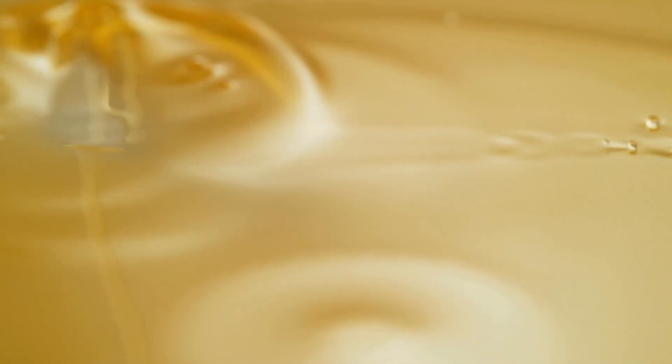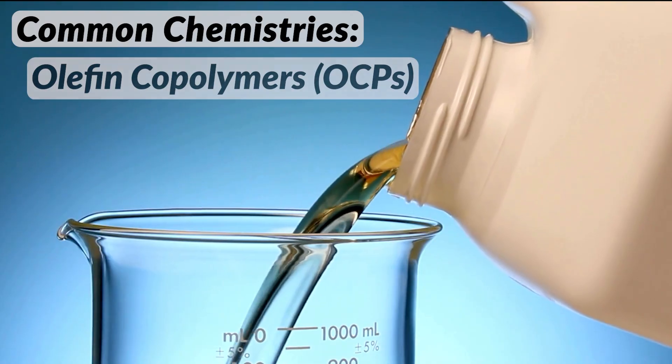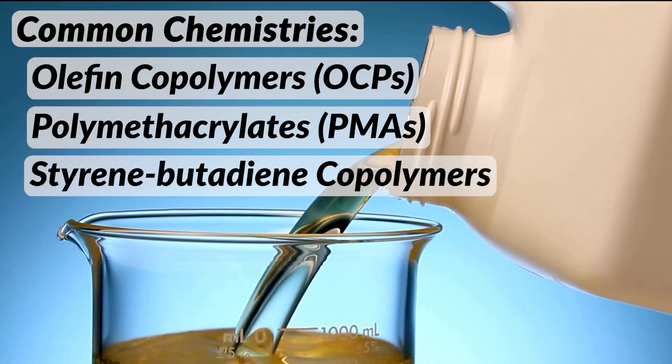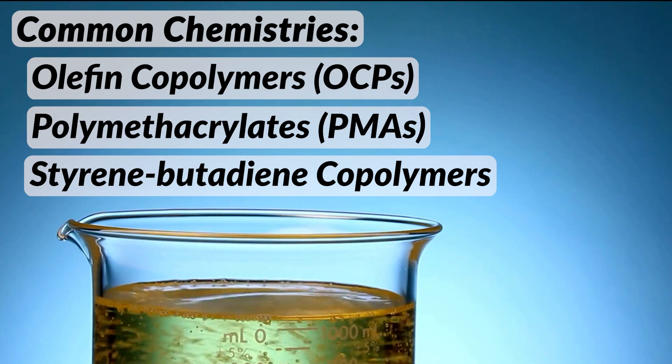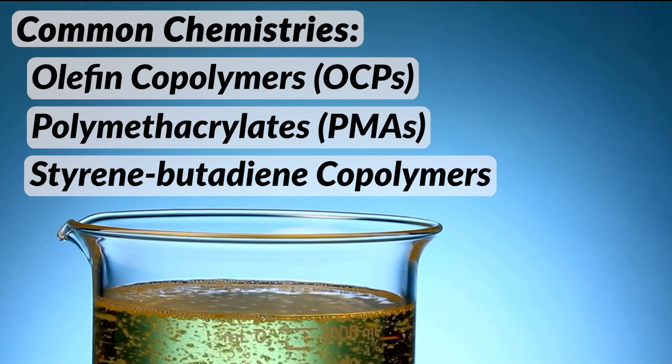Several different viscosity index improvers are available to formulators. Common chemistries used in lubricants include olefin co-polymers, polymethacrylates, and styrene butadiene co-polymers. These polymers expand at higher temperatures to increase viscosity and contract at lower temperatures so fluids flow more easily.